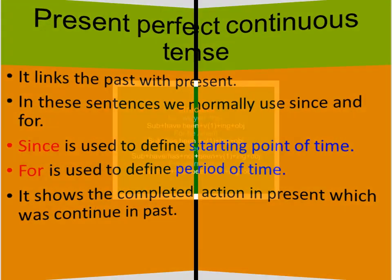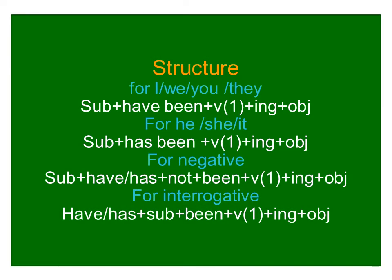The structure for first person plural is: subject + have been + verb first form + ing + object. For third person singular, it is: subject + has been + verb first form + ing + object. Notice that verb first form with '-ing' is used here. This is because present perfect continuous tense combines present continuous tense and present perfect tense.